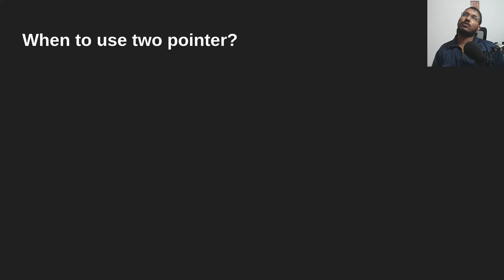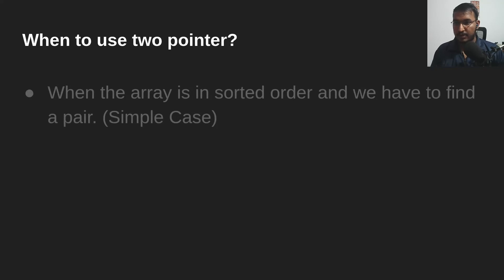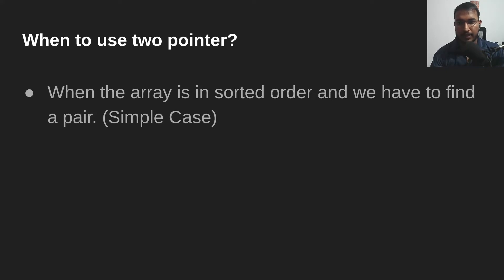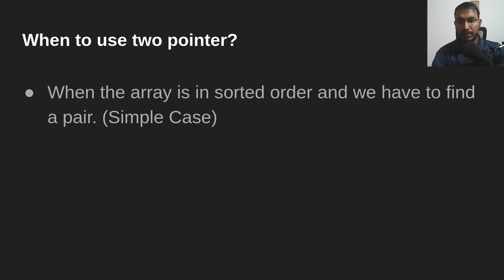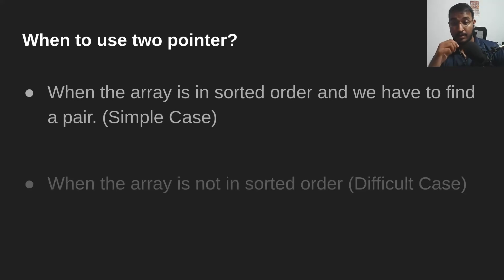Now the question is: when to use two pointers and how to identify it? A lot of this comes with practice, but there are some things to keep in mind. The simple case is when the array is sorted and we have to find a pair — most easy questions will be around this concept. When the array is sorted and you have to find a pair of some sort, it becomes quite simple to identify that two pointers should be applied.